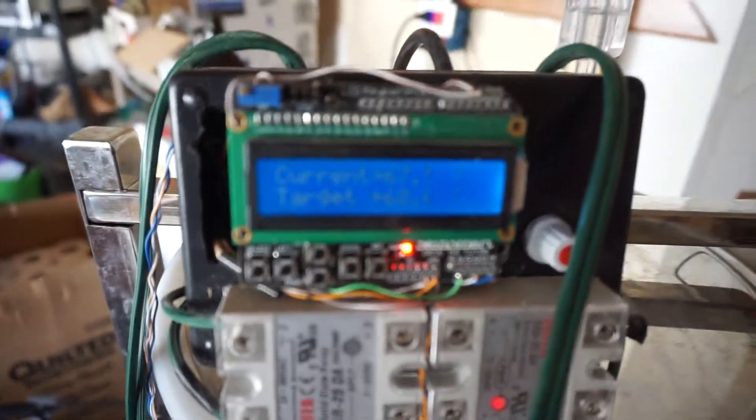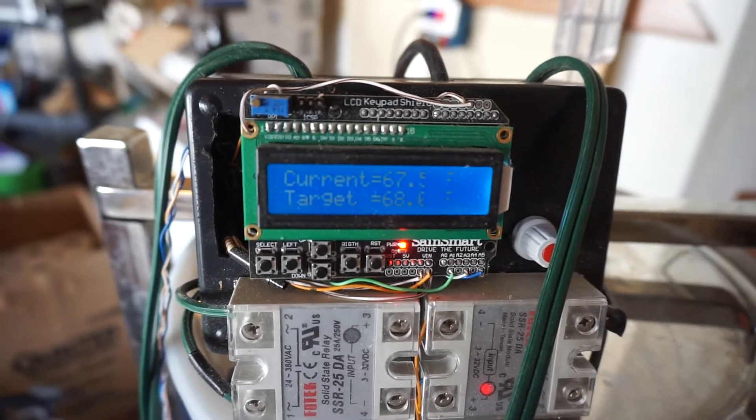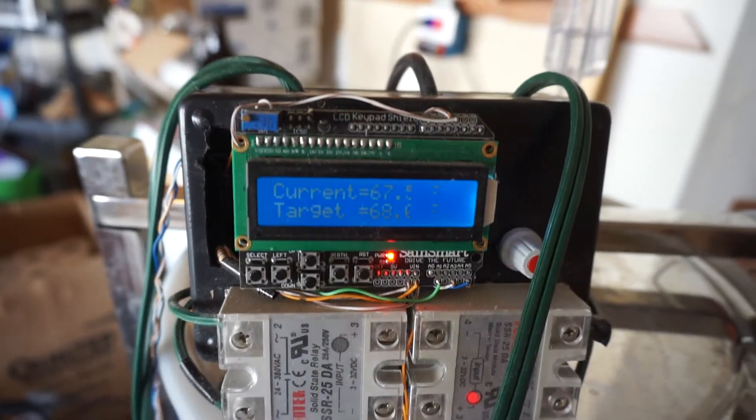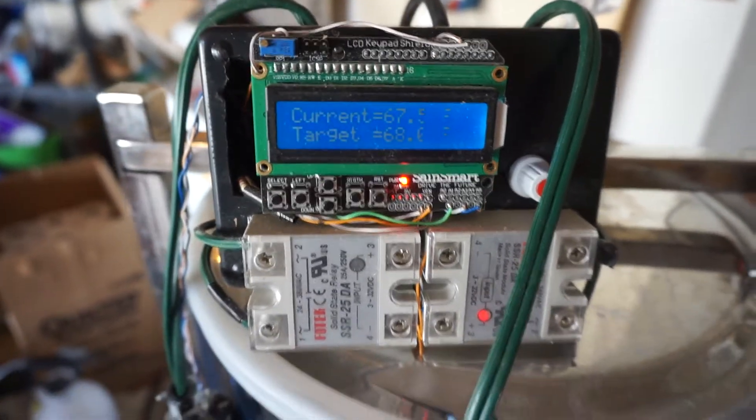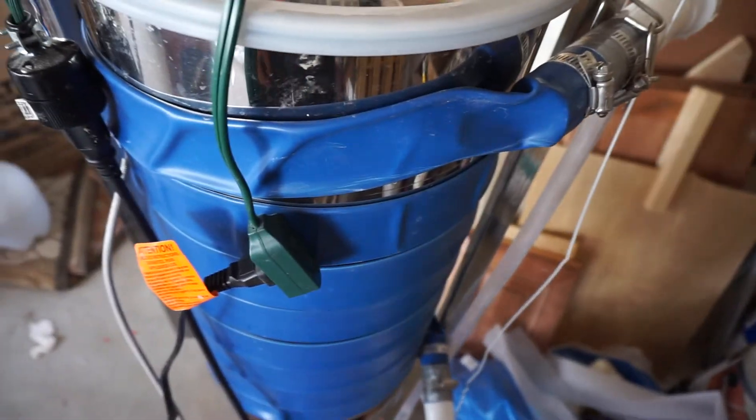That's keeping this at 85 Fahrenheit. Right now I set my target to 68, so if it falls below 68 it's going to switch on the pump. The pump is going to circulate the hot water around the fermenter.